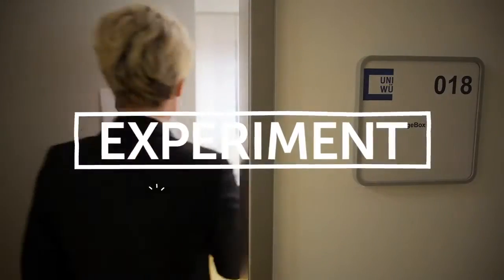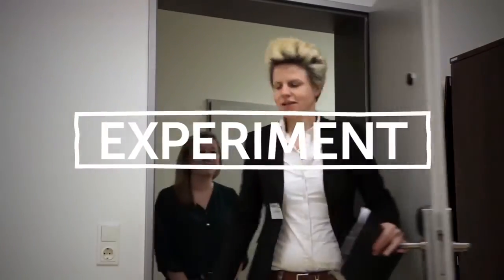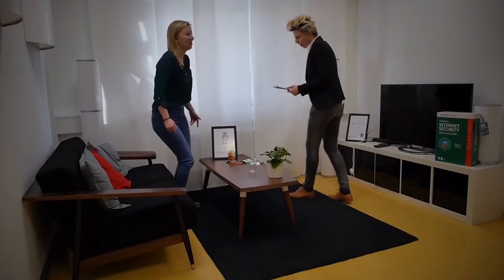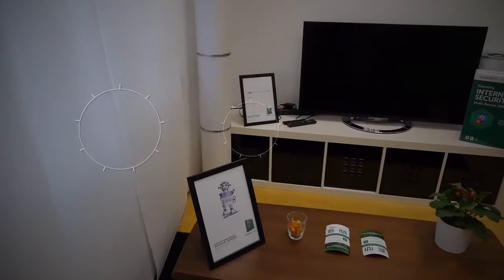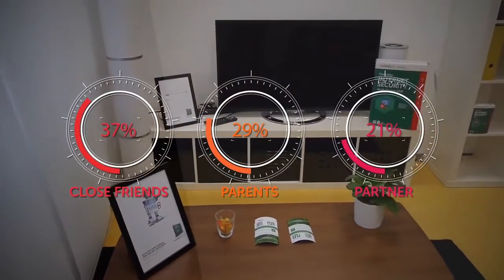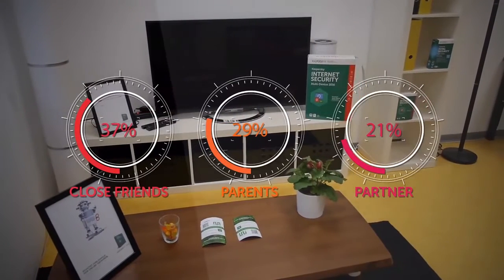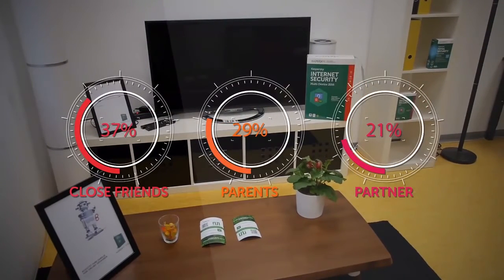An experiment which asked participants to rate various people and objects in their lives in order of importance revealed that smartphones are set to overtake friends and family in importance. 37.4% of participants rate their smartphone as more important than or equally important as their close friends.